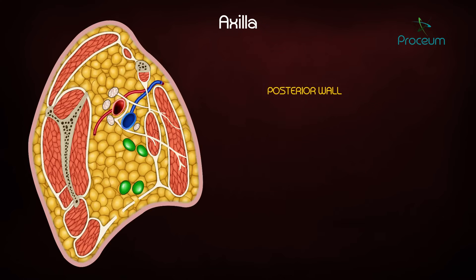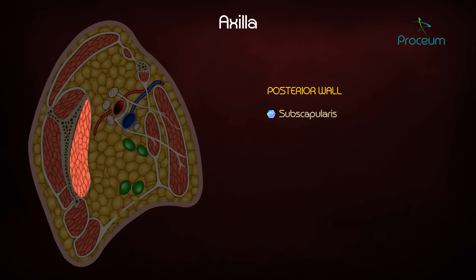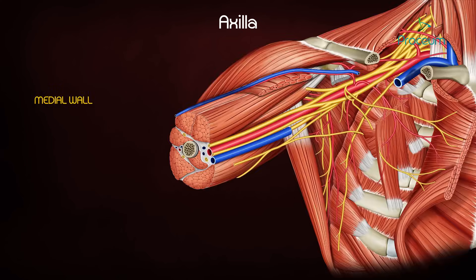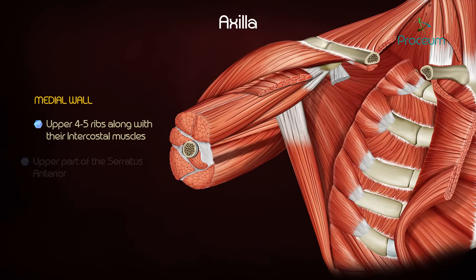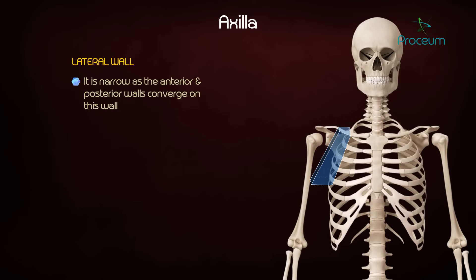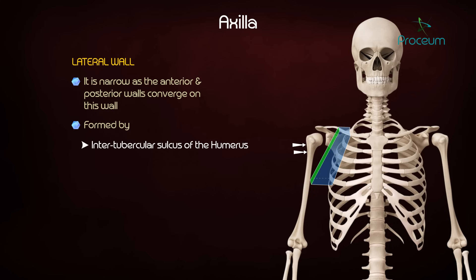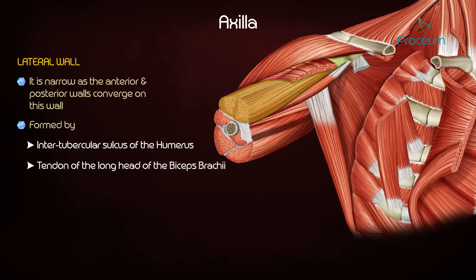The posterior wall consists of subscapularis, latissimus dorsi, and teres major. The medial wall is formed by the upper four to five ribs along with their intercostal muscles and the upper part of serratus anterior. The lateral wall is narrow, as the anterior and posterior walls converge on this wall. It is formed by the intertubercular sulcus of the humerus.